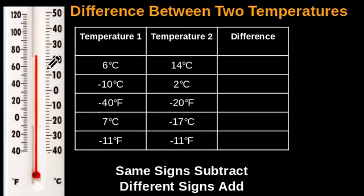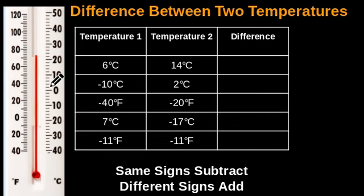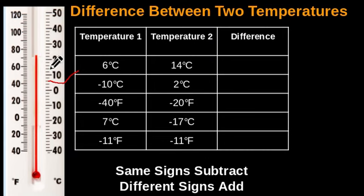Now that we know that, we can find the difference between two temperatures after labeling where each temperature is. For six degrees Celsius, that's above zero, and remember each line reads two — so we go two, four, six. So this is six degrees Celsius right here. And 14 degrees Celsius, that'll be above 10: 10, 12, 14. So this is 14 right here. We take that all the way to 14.